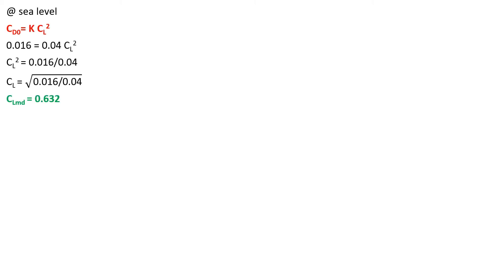Now let's get into the problem. Considering the aircraft at sea level condition, at minimum drag the condition is CD naught equals K·CL square. Substituting the values of CD naught and K, the coefficient of lift CL is determined as 0.632. At the same condition, the coefficient of drag CD equals 2 times CD naught, giving a value of 0.032.